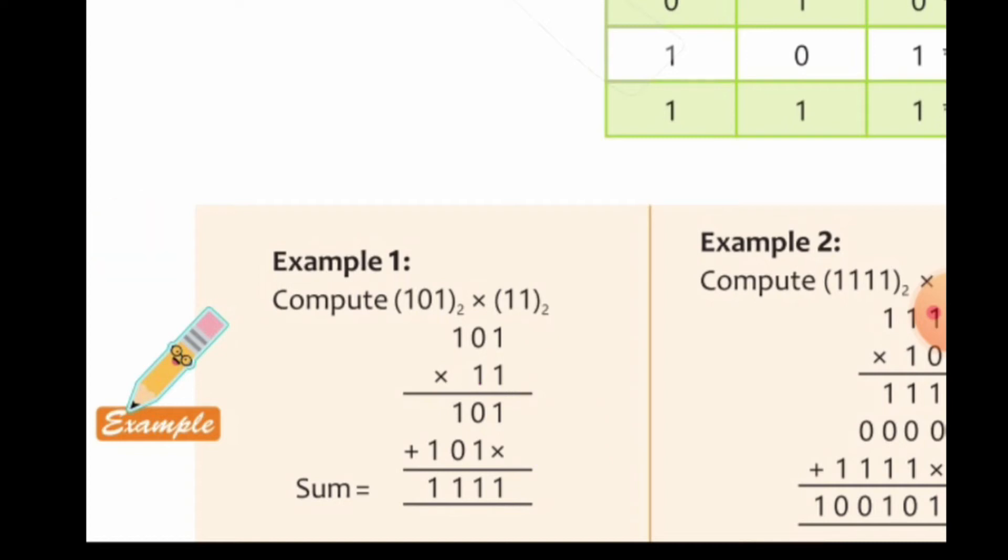But now, this time we need to follow the addition rules. So, 1 as it is, 0 plus 1 is 1, 1 plus 0 is 1 and then 1 is as it is. This is a simple example.